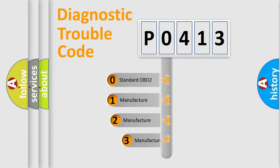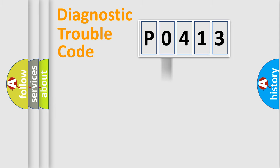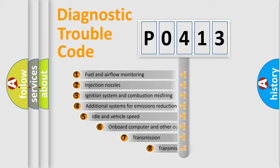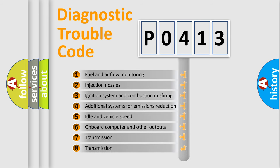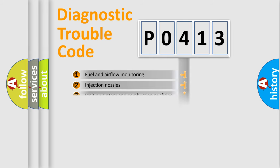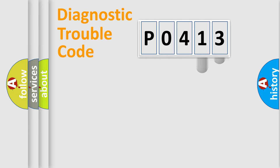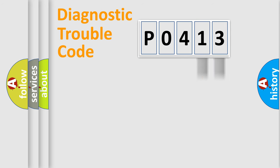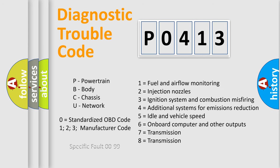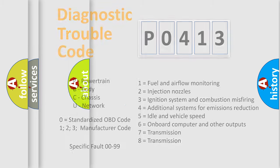If the second character is expressed as zero, it is a standardized error. In the case of numbers 1, 2, or 3, it is a more specific expression of a car-specific error. The third character specifies a subset of errors. This distribution is valid only for the standardized DTC code, where only the last two characters define the specific fault of the group. Such a division is valid only if the second character code is expressed by the number zero.